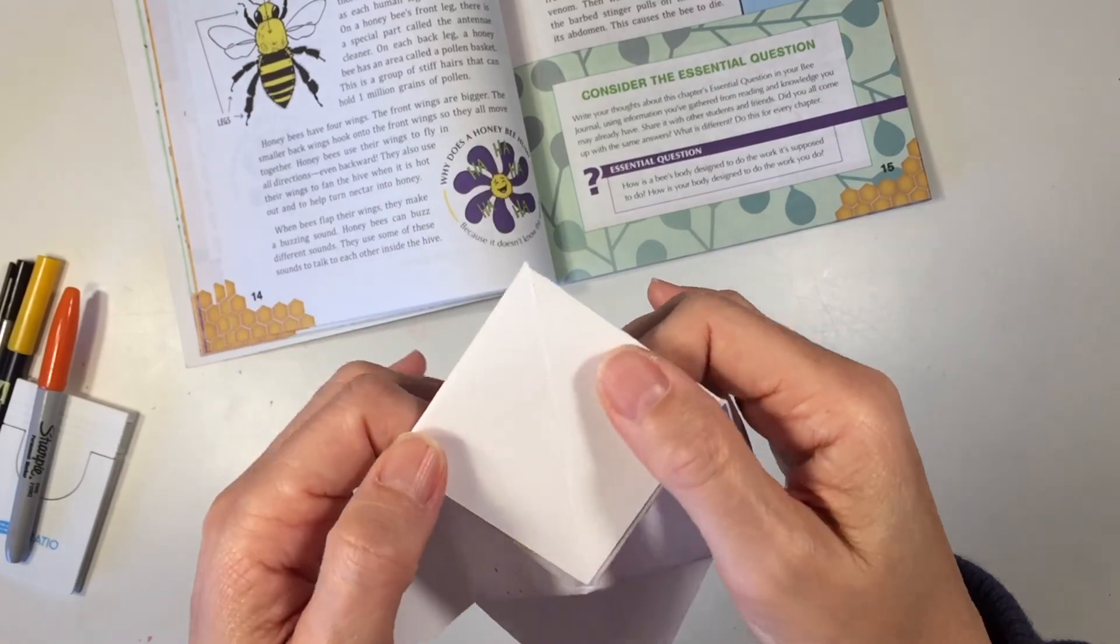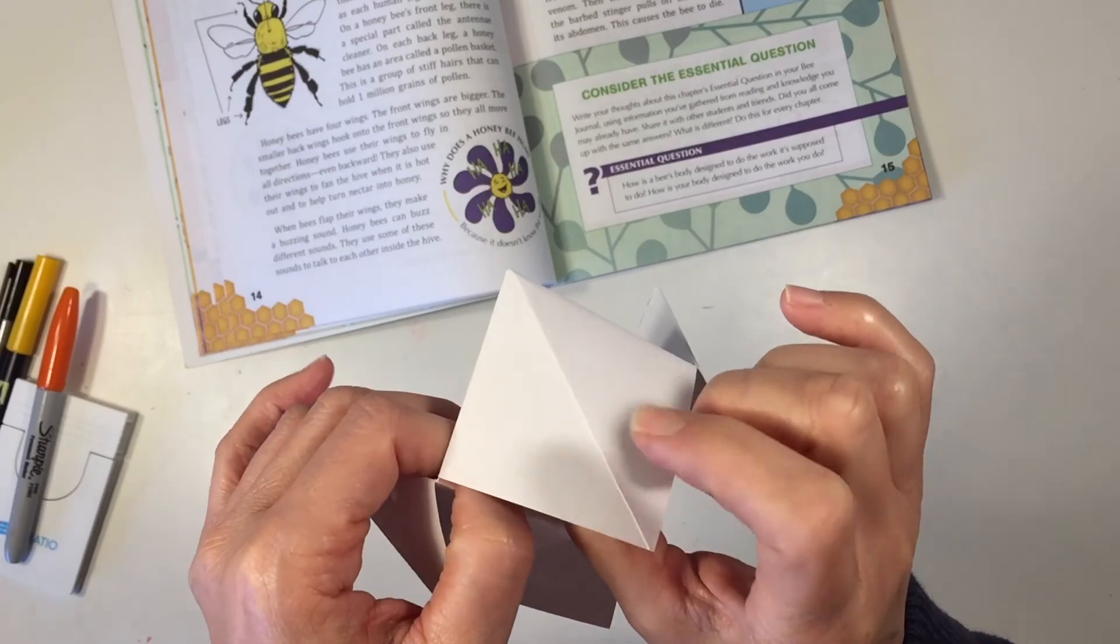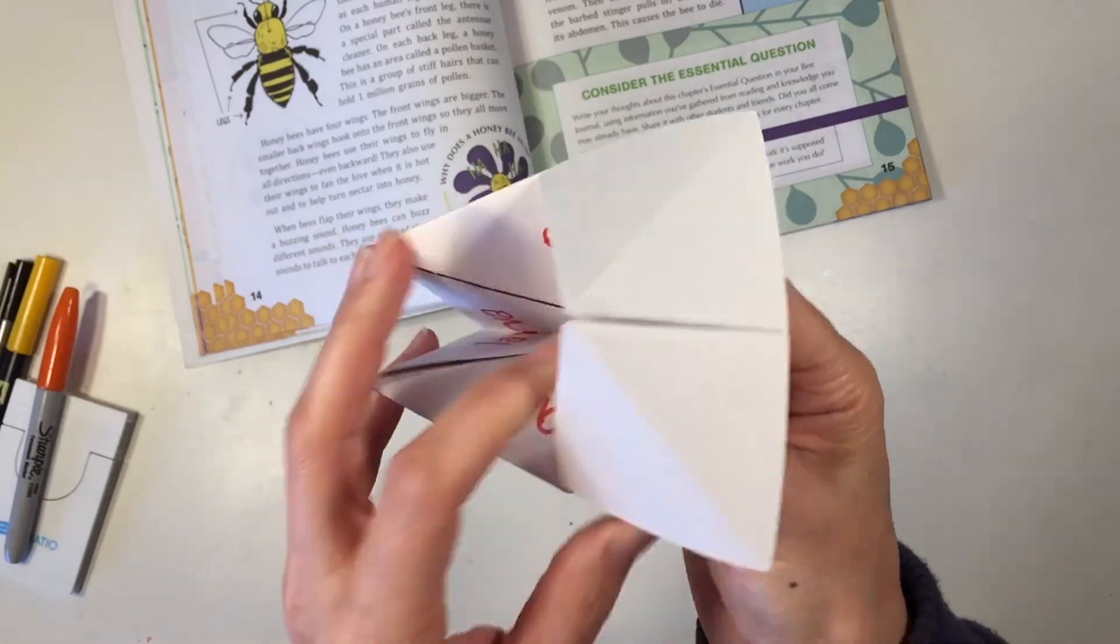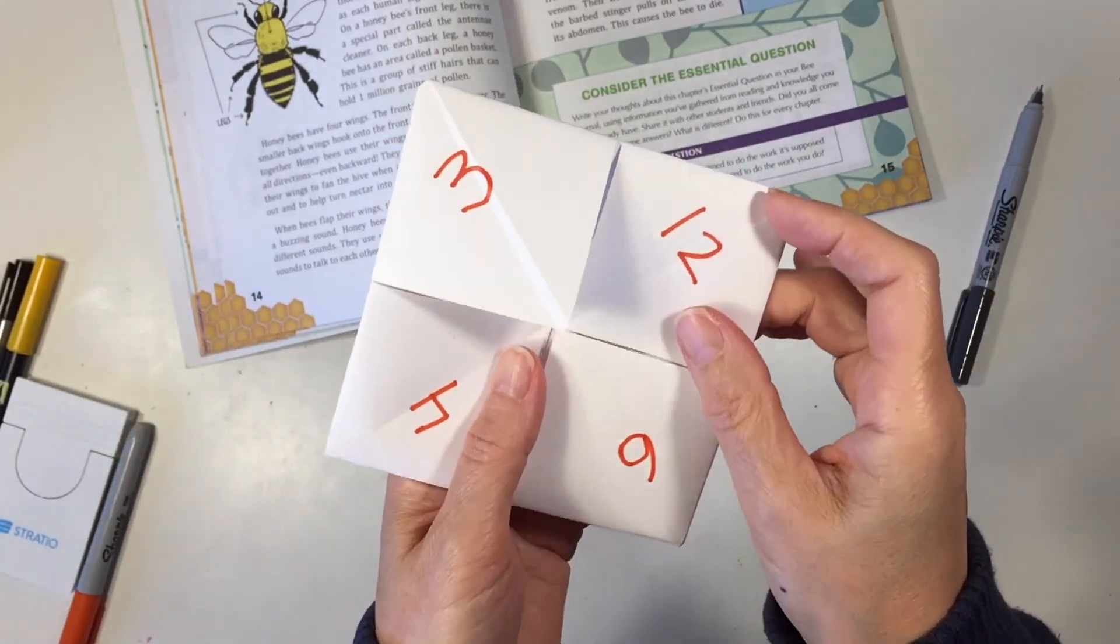The last thing I'm going to do is write a little bit of information on the outside of each of these tabs with a number so that we can begin playing the game. I wrote down four numbers that correspond with the bee in some way.